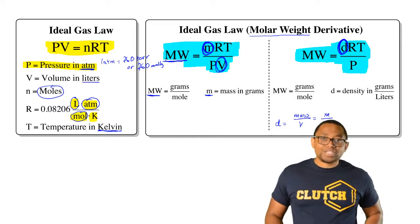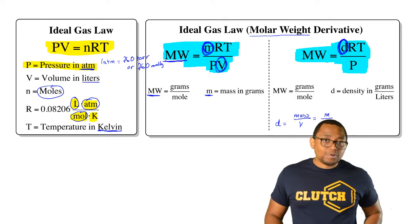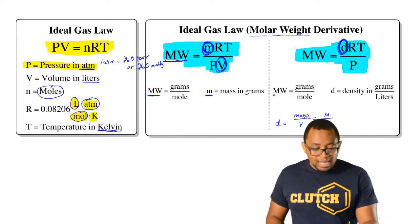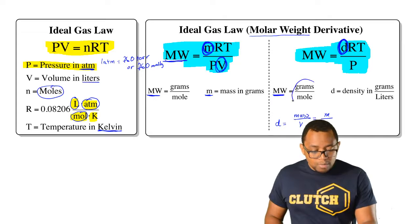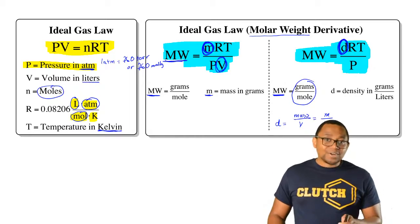So in this other version, it's molecular weight or molar weight of the gas equals density times R, which is our gas constant, times T, temperature in Kelvin, divided by pressure in atmospheres. Again, MW is grams per mole. So density here is grams per liter.